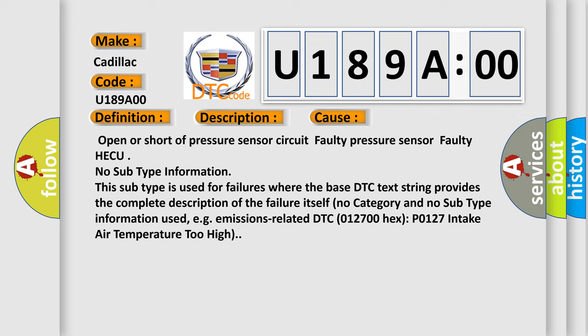Faulty HEC UNO subtype information. This subtype is used for failures where the base DTC text string provides the complete description of the failure itself. No category and no subtype information used, e.g. emissions-related. DTC 012700-HECSP 0127 intake air temperature too high.